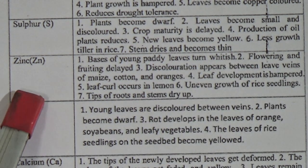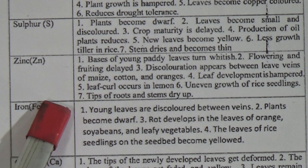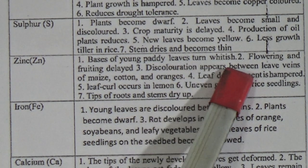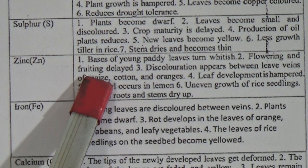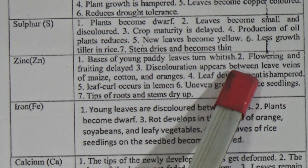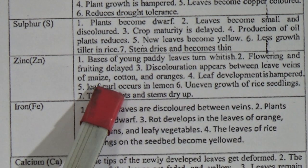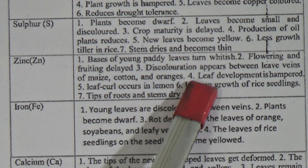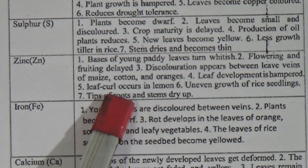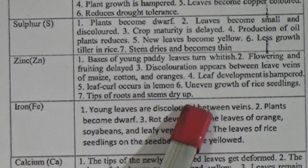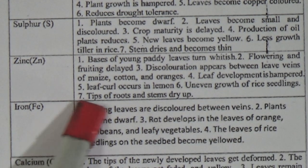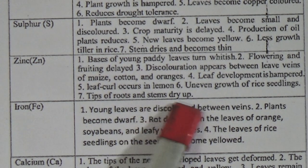Number 6 is Zinc. Deficiency symptoms of Zinc: 1. Bases of young cloudy leaves turn whitish. 2. Flowering and fruiting delayed. 3. Discoloration appears between veins of mint, cotton, and oranges. 4. Leaf development is hampered. 5. Leaf curl occurs in lemon. 6. Uneven growth of rice seedlings. 7. Tips of roots and stems dry out.